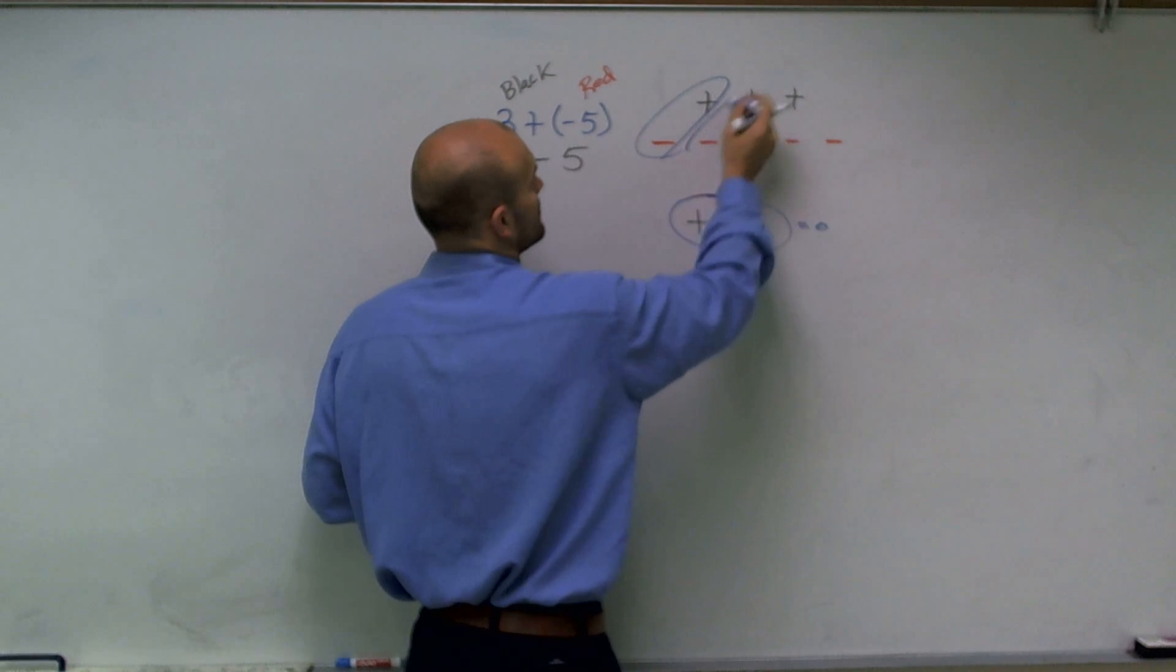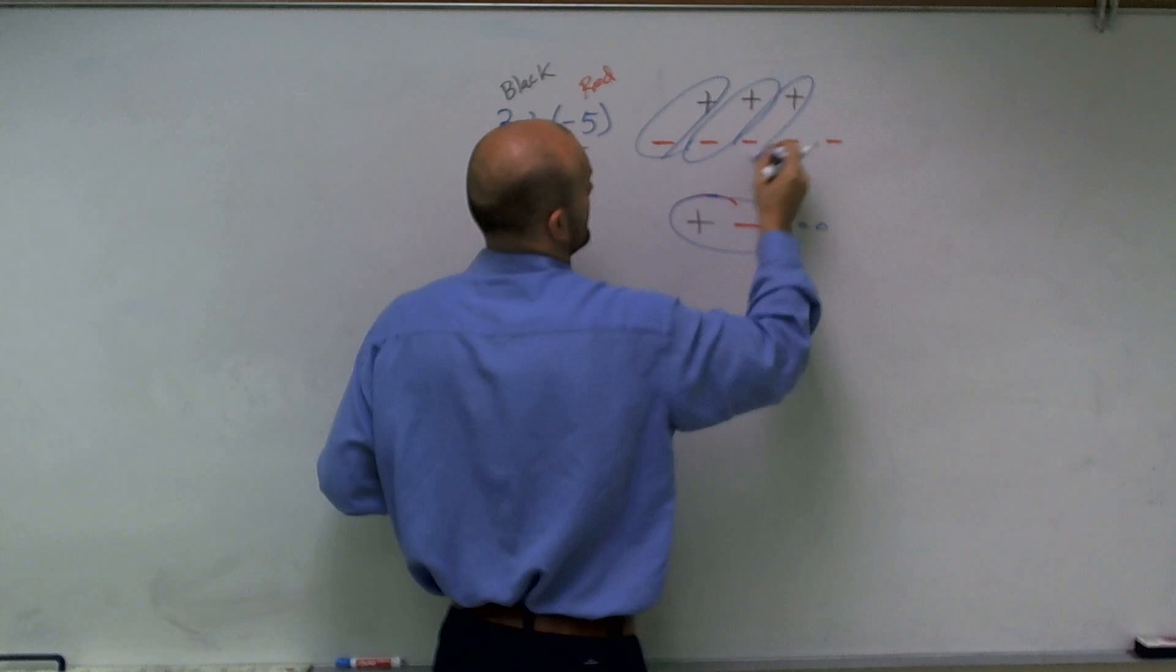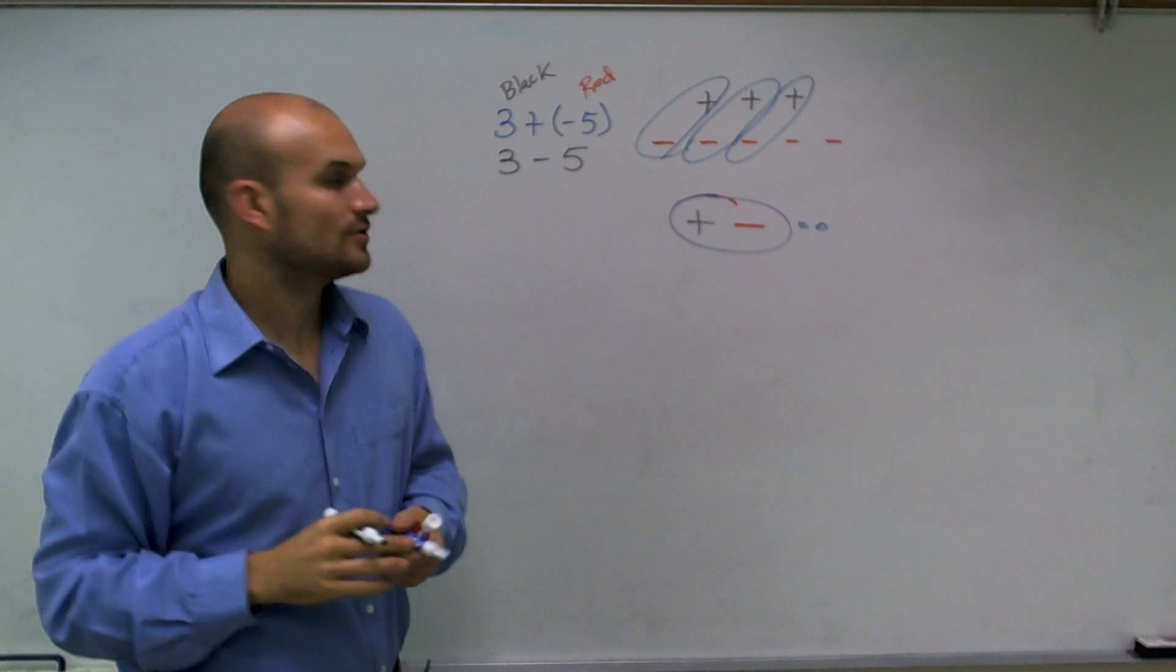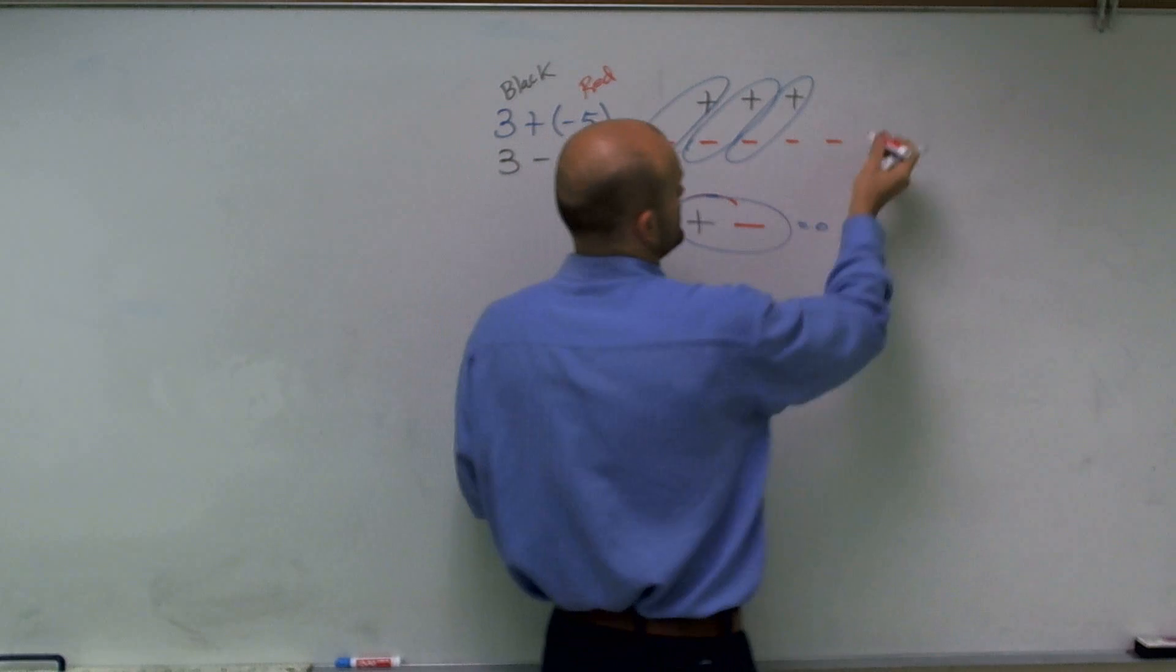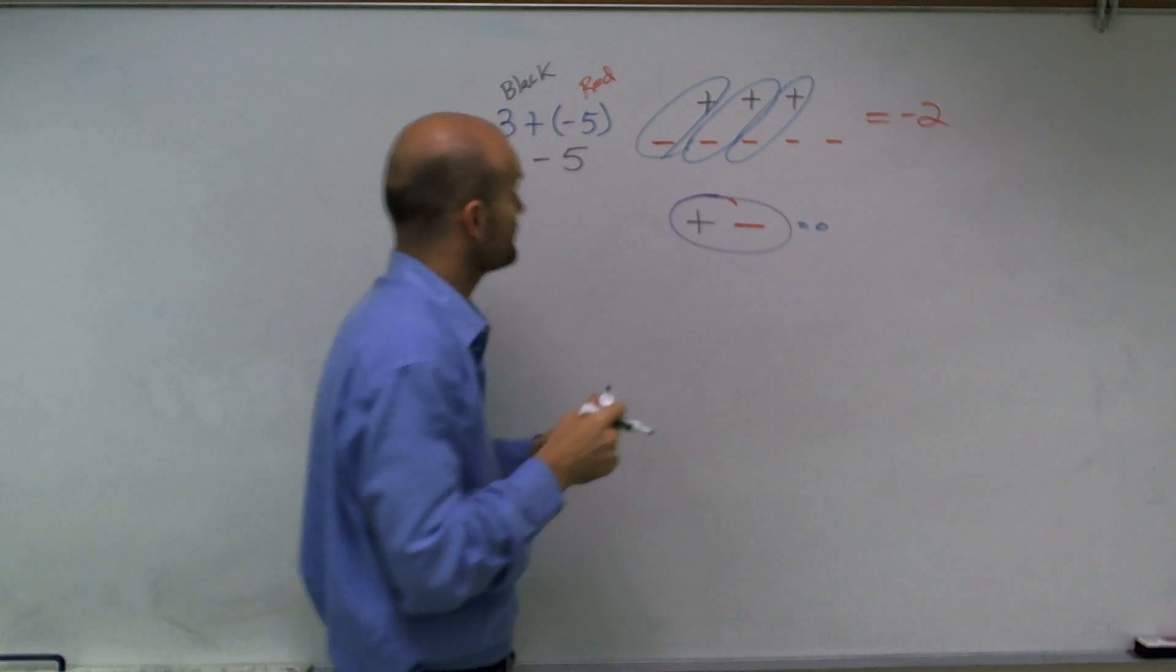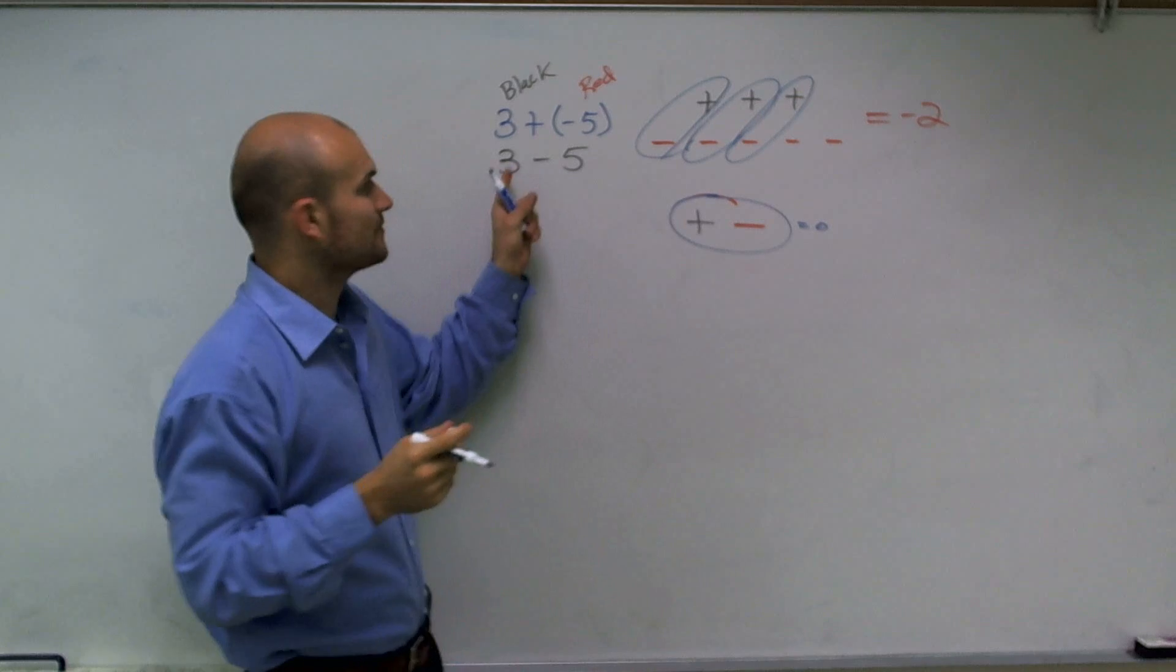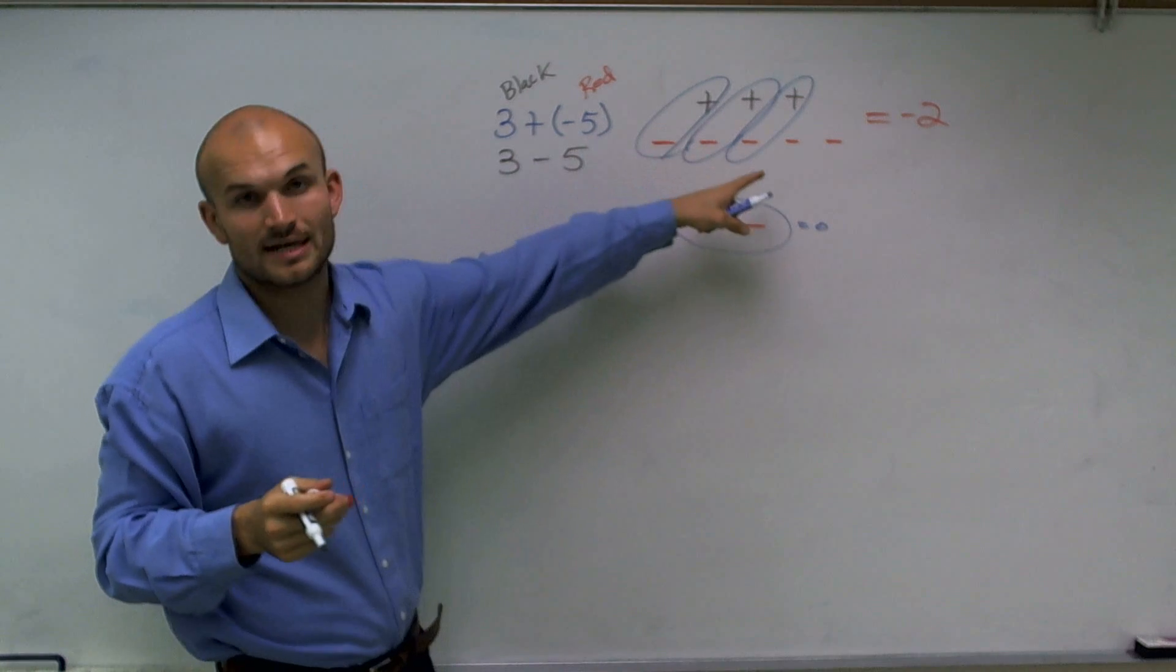So I have one pair here, another pair, and another pair. And so then what you'll notice is my final answer for this is going to be negative 2. So I have a positive 3 plus a negative 5 is equal to negative 2.